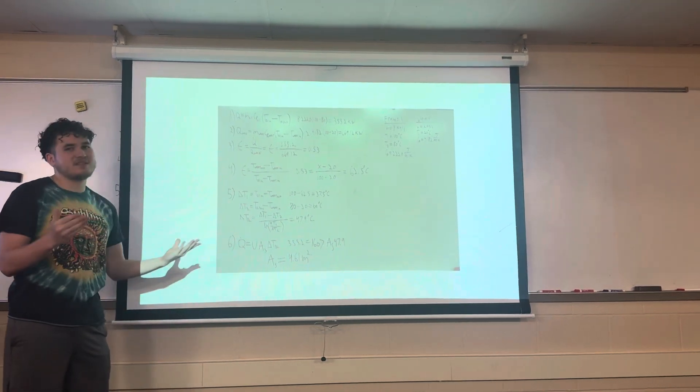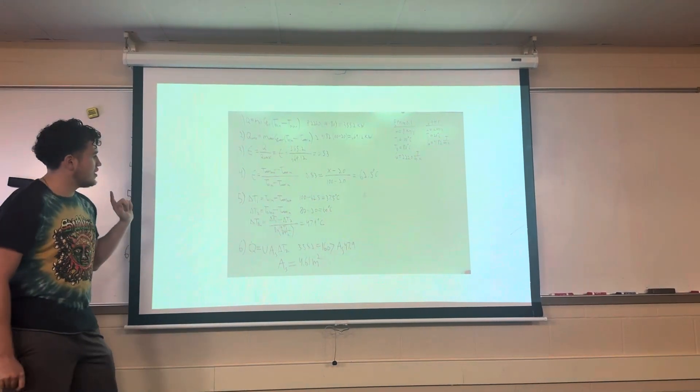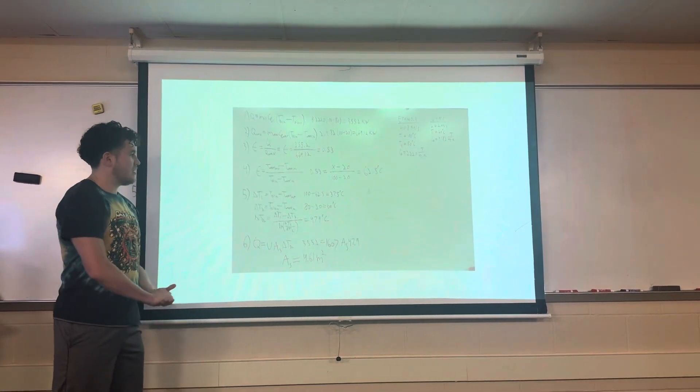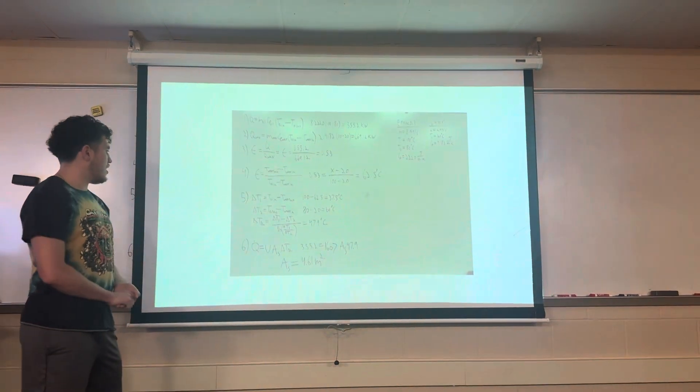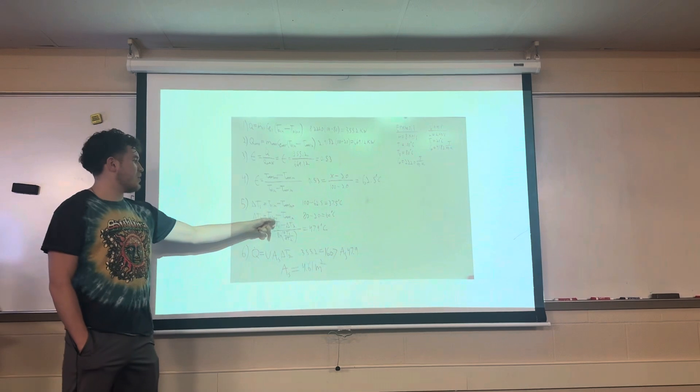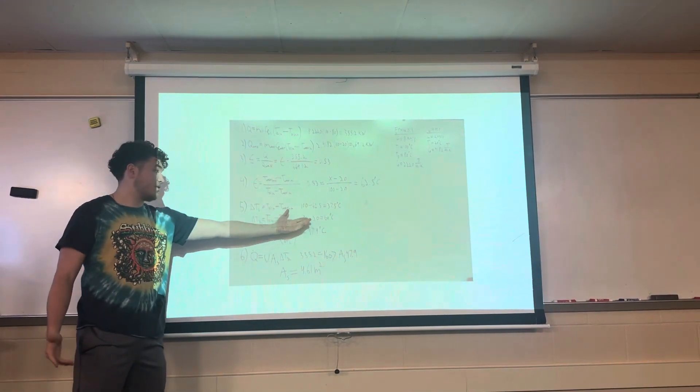The way I solve the system, I use the log mean temperature difference. Our first delta T1 is oil in minus water out. That ended up with 37.5 degrees Celsius. Our second was the oil out minus water in. That ends up with 60 degrees Celsius.